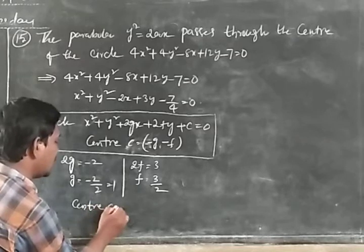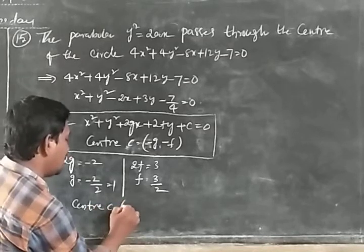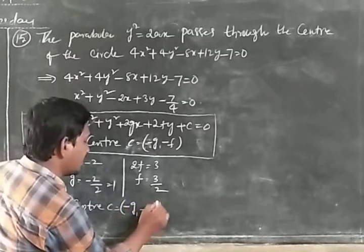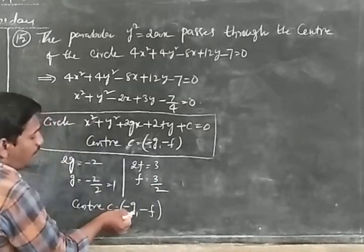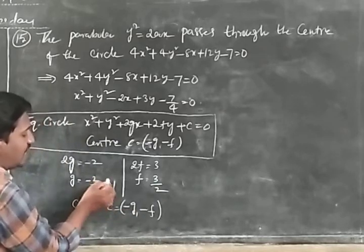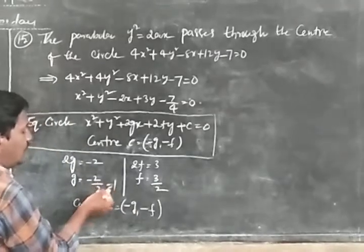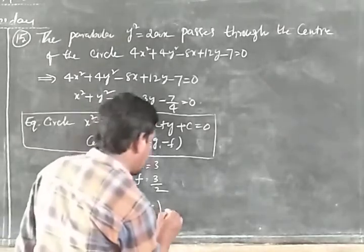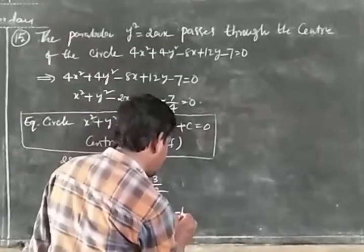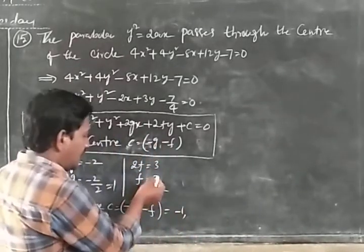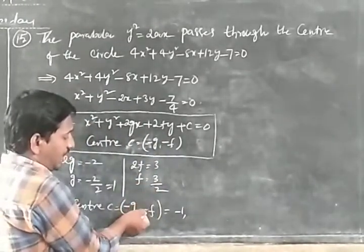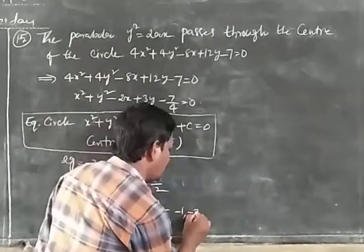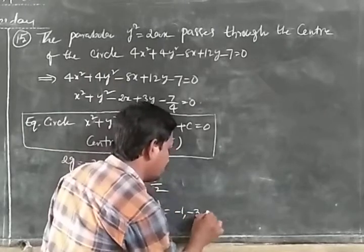The center is (−g, −f). So −g = −(−1) = 1, and −f = −3/2.